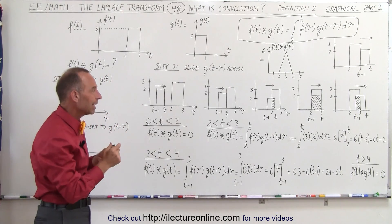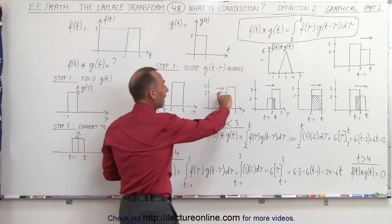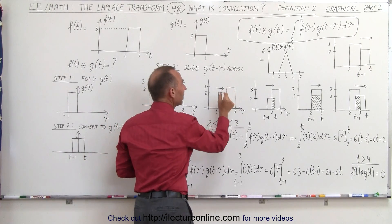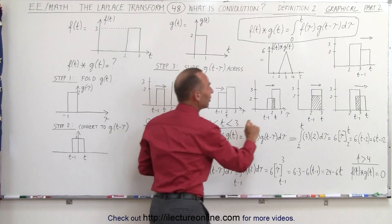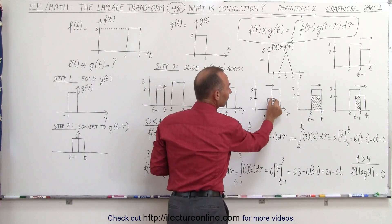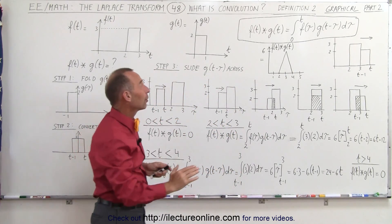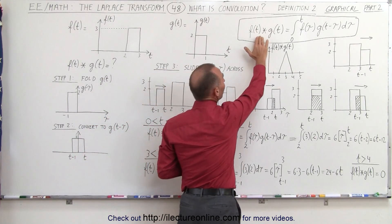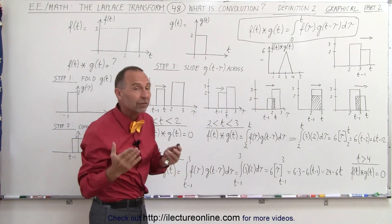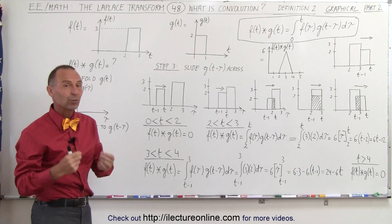We could see graphically that the value of the convolution was always going to be the height of the first function times the height of the second function times the amount of the overlap — so in this case it was going to be two times three times the width of the strip. Now, since this is also the definition of the convolution, we should be able to get the equations and the value of the convolution using that particular definition, and the answer is yes we can.